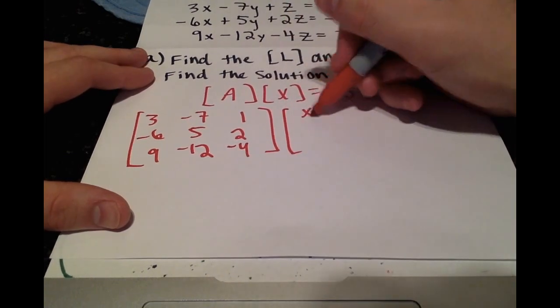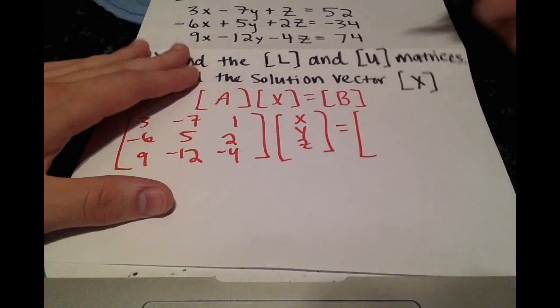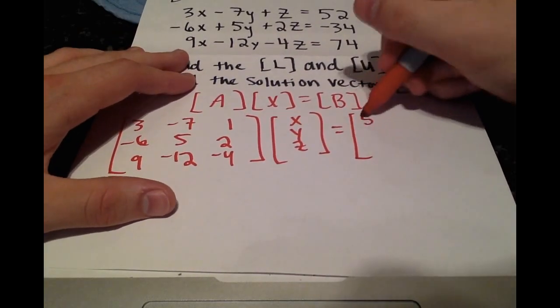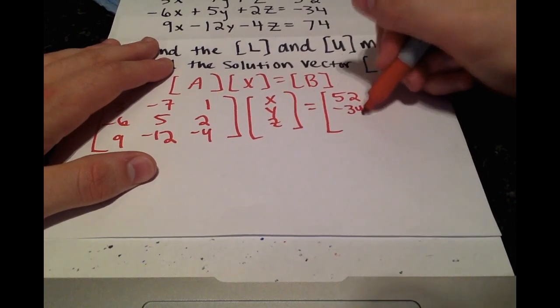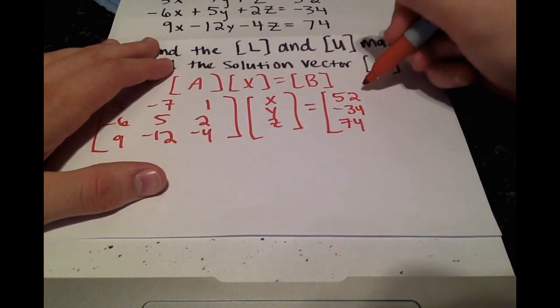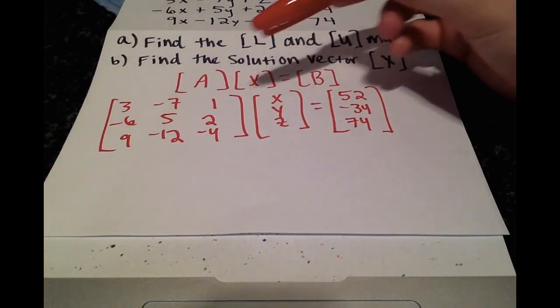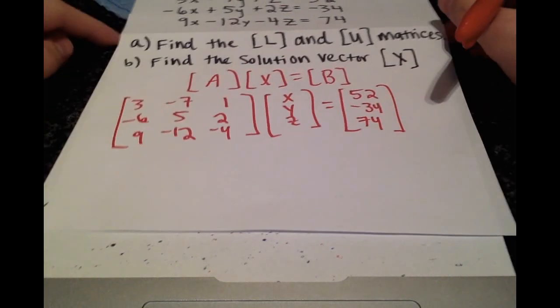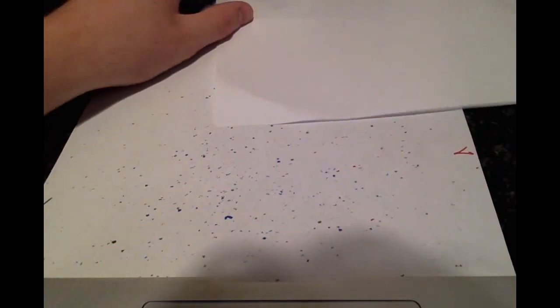The X vector is just the variables we want to solve for, and B will be the right-hand side of the equation. So we'll be using these values later on throughout this process of LU decomposition. And let's get started with that.